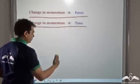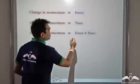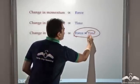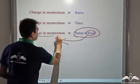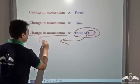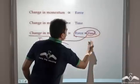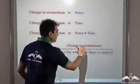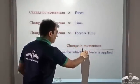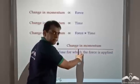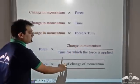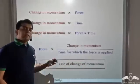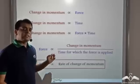We could combine these two to get: change in momentum is directly proportional to force into time. Now, let us bring time to the other side, so we get change in momentum by time is directly proportional to force. So force is directly proportional to change in momentum by time for which the force is applied — that is, change in momentum per unit time, or rate of change of momentum. This is what is stated in Newton's second law of motion.